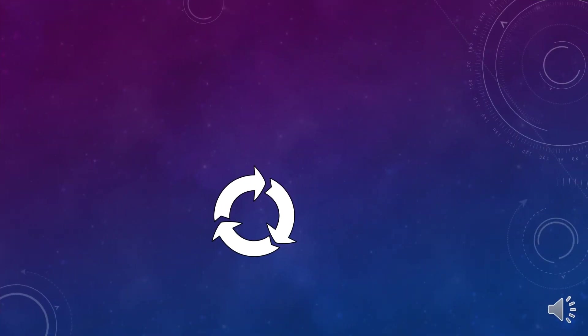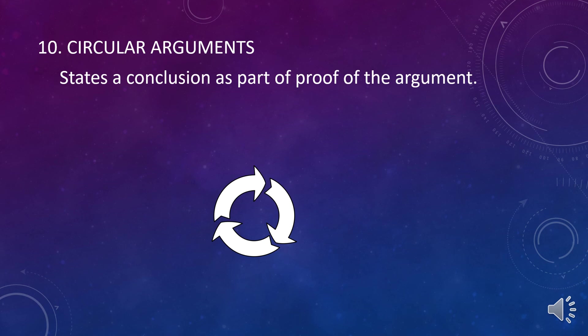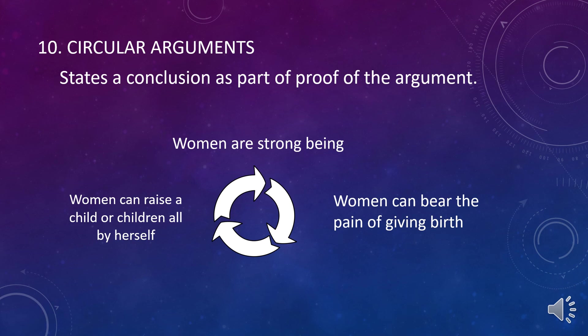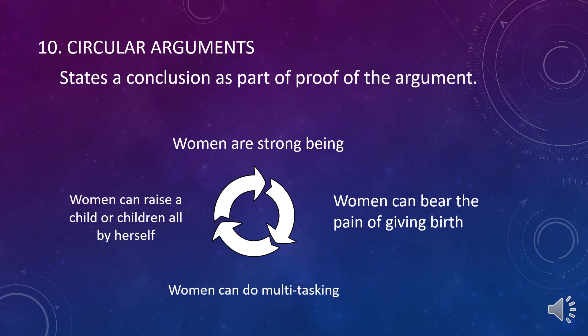The last type is what we call circular arguments. A circular argument states a conclusion as part of the proof of the argument. For instance, we say women are strong beings. Women can raise a child all by herself because women are strong beings. Women can bear the pain of giving birth because women are strong beings. Or women can multitask because women are strong beings.